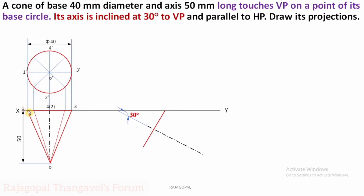The length from point 1 to point 3 in the top view is 40 mm diameter. From the axis, this length must be 20 mm on each side. Make sure that this base makes 90 degrees with the axis. You can clearly see that 1-2-3 is the base which makes 90 degrees with the axis.